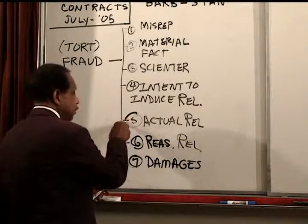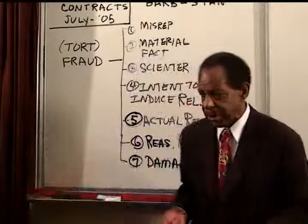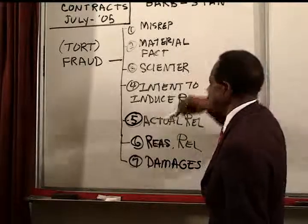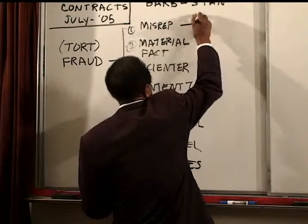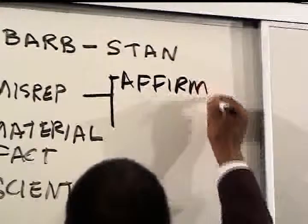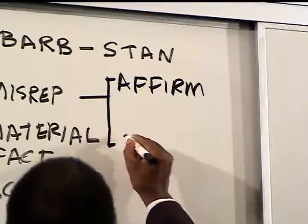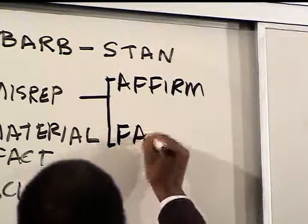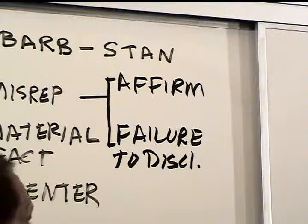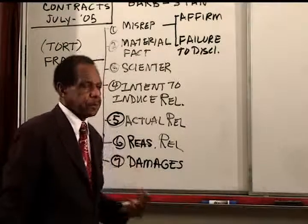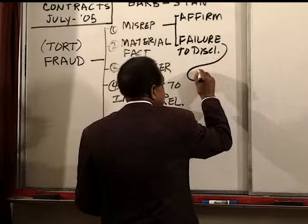These are the seven requirements of fraud. Fraud is tested often enough that it's worth memorizing this list. The misrepresentation can be either an affirmative misrepresentation — just another word for lying — or failure to disclose where there's a duty to disclose. The question then becomes: when does one have a duty to disclose?